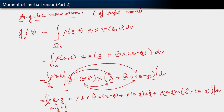What we are seeing there is that g is the position of the center of mass. So that term is really the position of the center of mass crossed with m·ġ, which is the linear momentum of the center of mass.